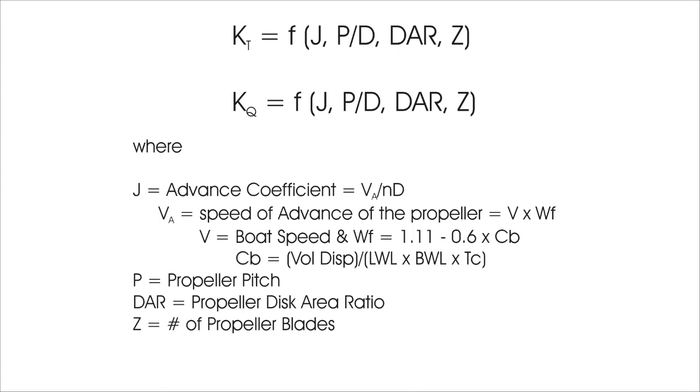The next variable is propeller pitch p divided by propeller diameter. The third variable is the disk area ratio of the propeller, which we talked about a little bit ago. And finally, the last variable is z, the number of propeller blades.